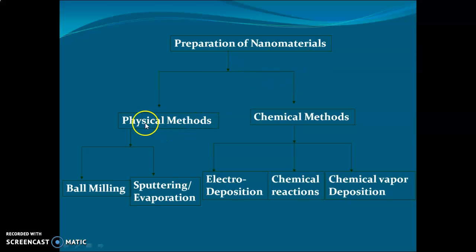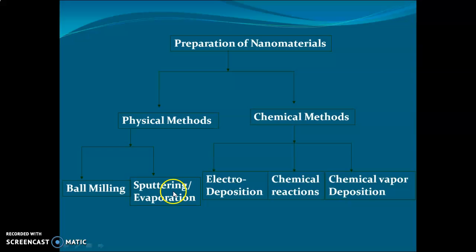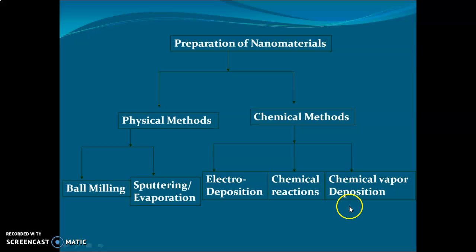Nanomaterials can be prepared by different methods — physical methods and chemical methods. Physical methods consist of two techniques: ball milling and sputtering evaporation. Chemical methods include electrodeposition, chemical reaction, and chemical vapor deposition. These are the ways in which nanomaterials such as nanorods, nano dots, and clusters are made.